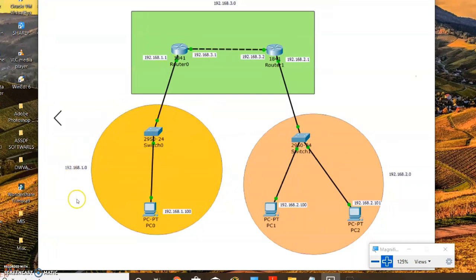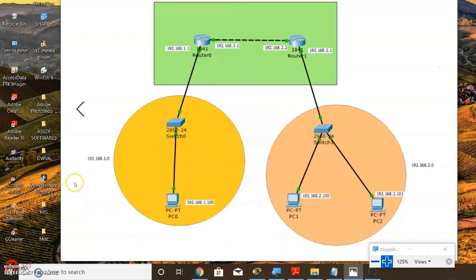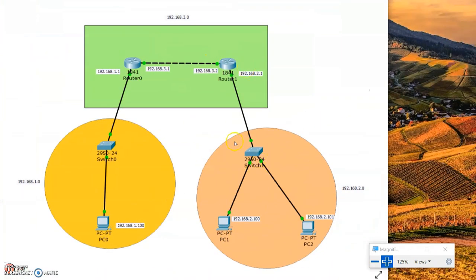The very first thing is we need to create this diagram as it is. Then we will apply the IP addresses and create two routers and two switches. Finally, we would like to apply routing information protocol in both these routers, so that we can communicate from one PC to another, from one network to the other through RIP. So this is our very first aim.